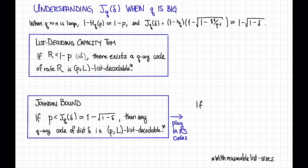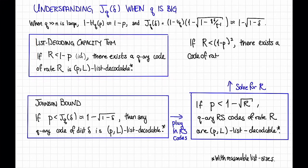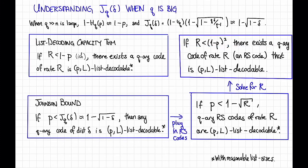Plugging in Reed-Solomon codes: if p is less than 1 minus the square root of r — since for Reed-Solomon codes 1 minus delta equals r — then q-ary Reed-Solomon codes of rate r are p-l list decodable with reasonable list sizes. Solving for r to get something more directly comparable to the list decoding capacity theorem, we get: if r is less than the square of 1 minus p, then there exists a q-ary Reed-Solomon code of rate r that is p-l list decodable for reasonable list sizes.